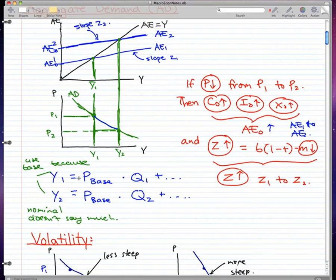I forgot to mention something in the last video. In the case where CEO, IO, XO increase and that causes aggregate expenditure to increase, government spending is not affected by falling prices.